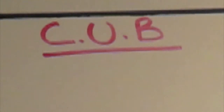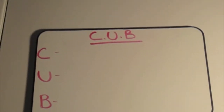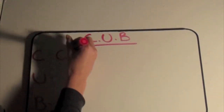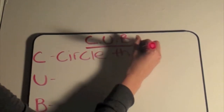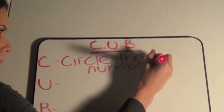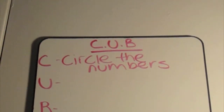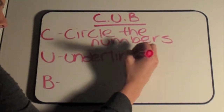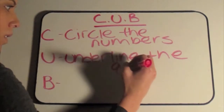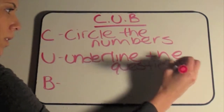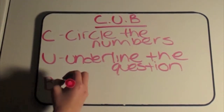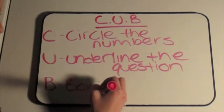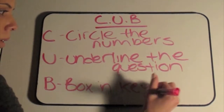I will be demonstrating a strategy that you will use to solve word problems. It's known as CUB. The C in CUB stands for circle the numbers. The U stands for underline the question. And the B stands for box in key words.